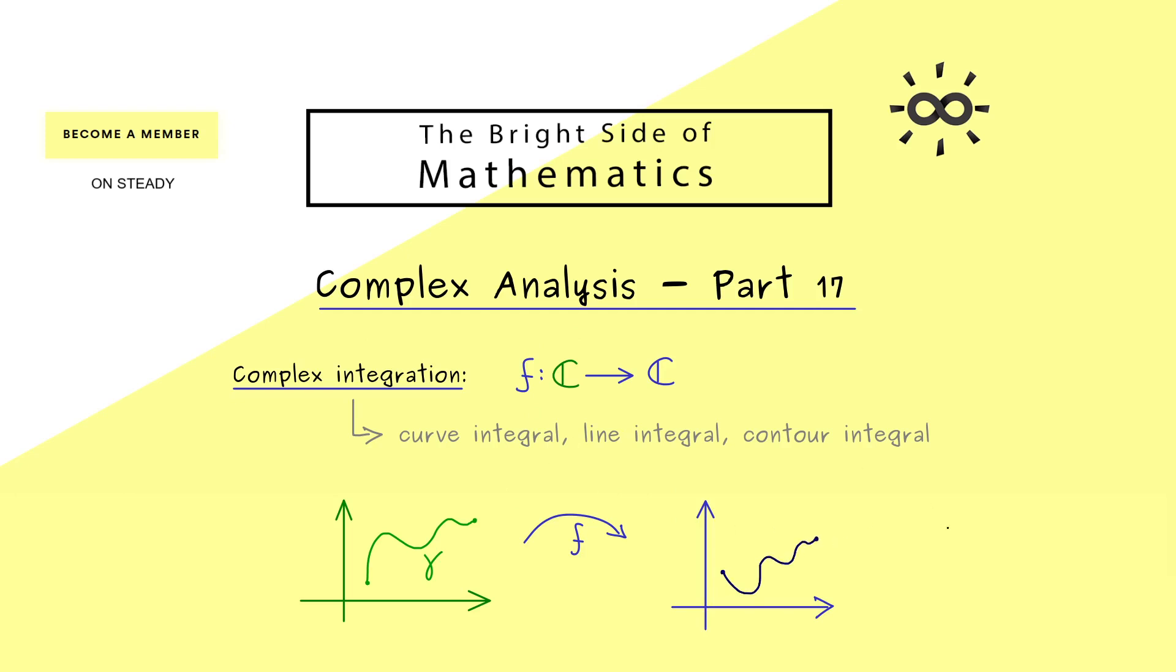Now with these informations we will be able to define the integral of f along the curve gamma. And then we write this as the integral f dz. And please note the result here should be a complex number.